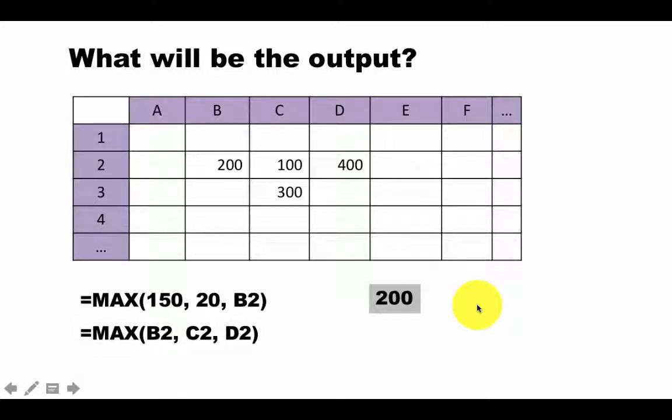Equals max b2, c2, d2. I assume that you pause the video and you're continuing it and of course the result is going to be 400 because that's the highest value among b2, c2 and d2. So it's as simple as that.